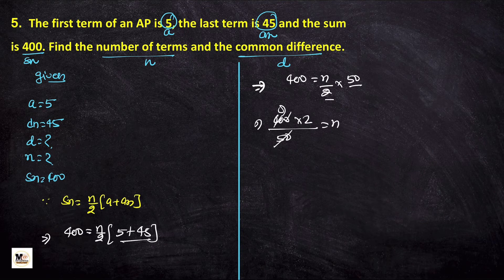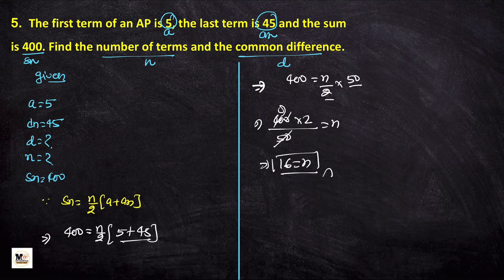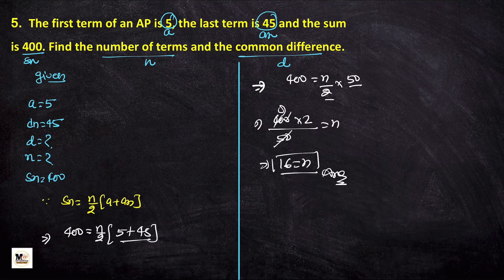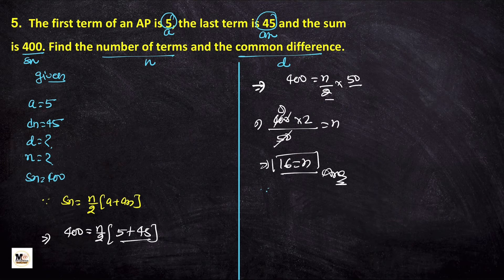So the number of terms n equals 16. That's the first answer. Now we need to find the common difference. The formula is: an equals a plus (n minus 1) times d.